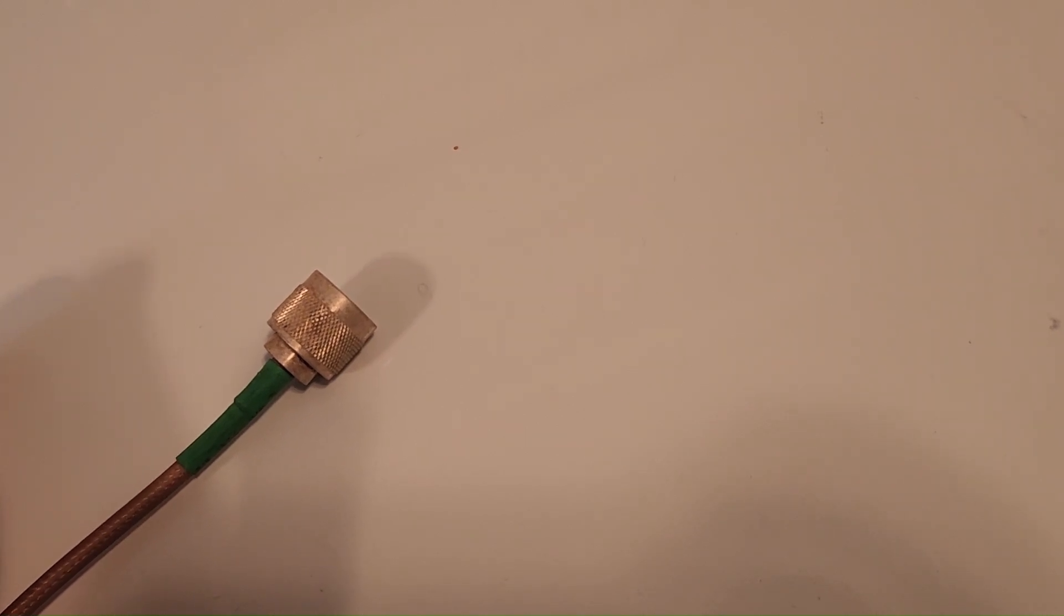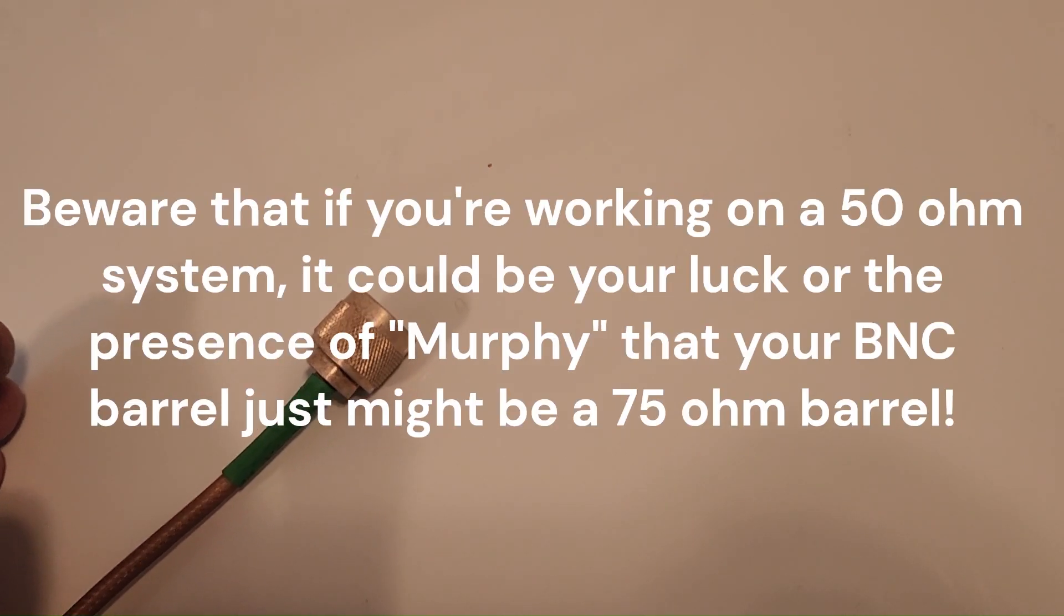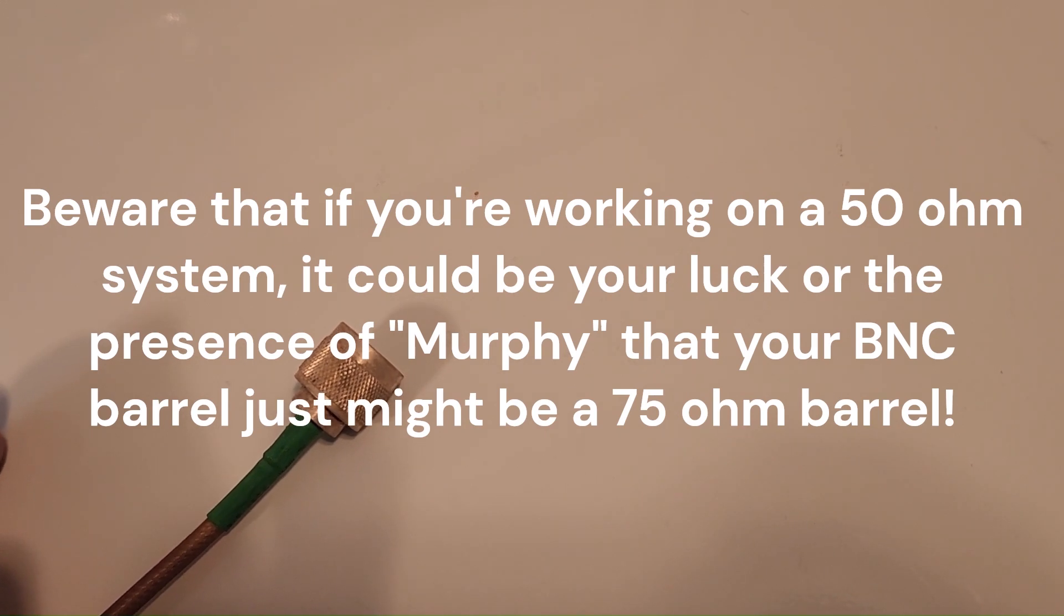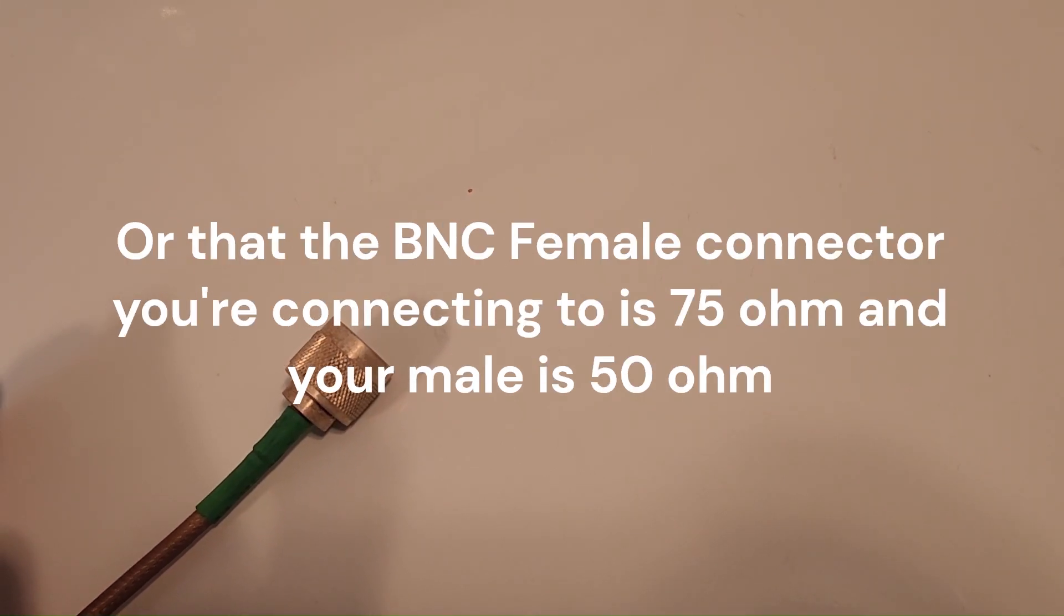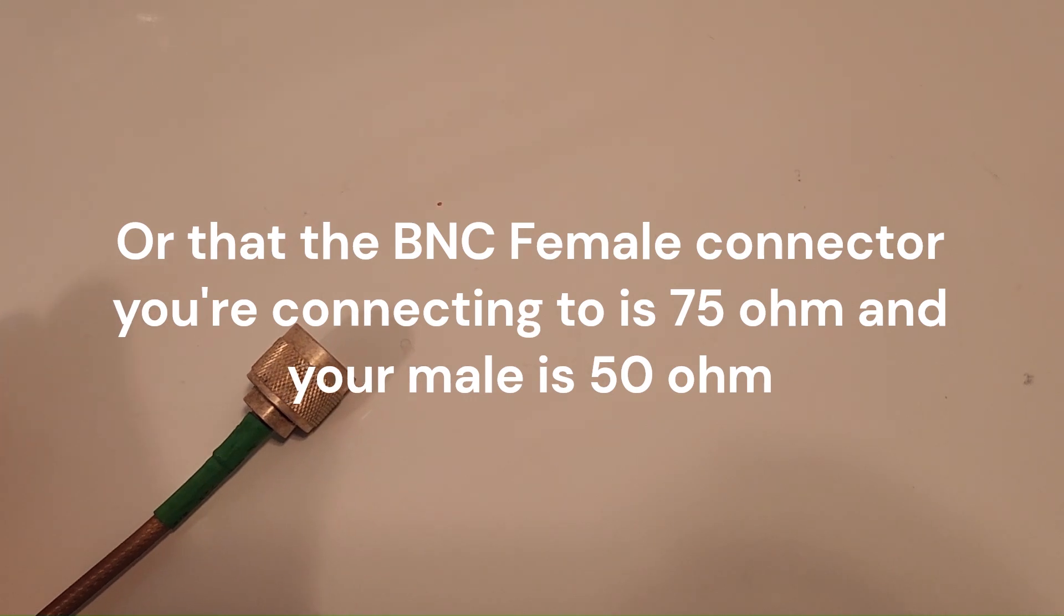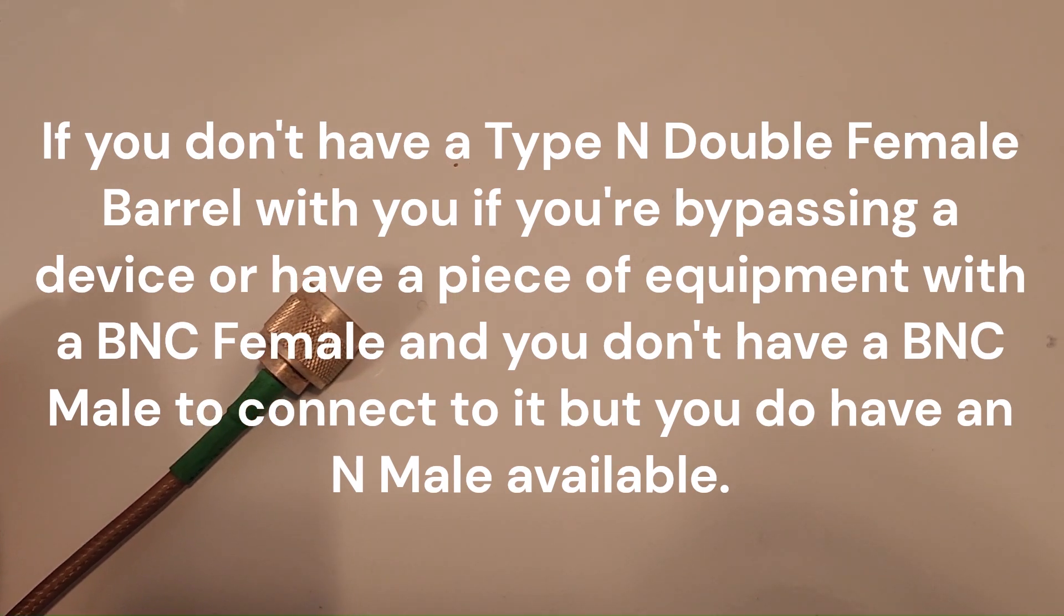Again, be careful if by any chance the female is a 75 ohm, say it's a 75 ohm system or for whatever reason you've got a 75 ohm female and a 50 ohm male. Be careful because the larger diameter of the male pin will spread out the female socket and when you pull it apart you need to make sure that you pinch the female piece of the female socket back together again. Okay, very good. A good little trick to save your tail at a site using a BNC barrel to bypass the device that has two N males on it.